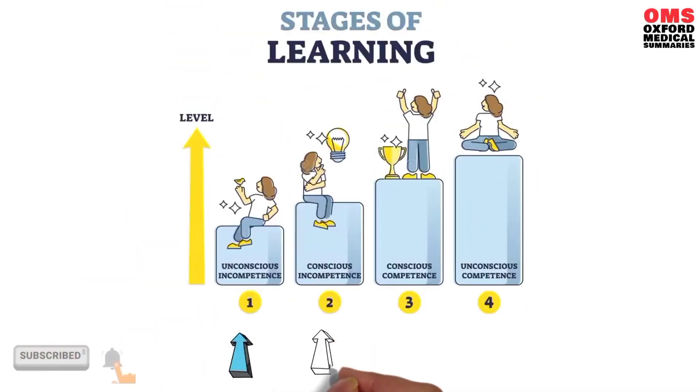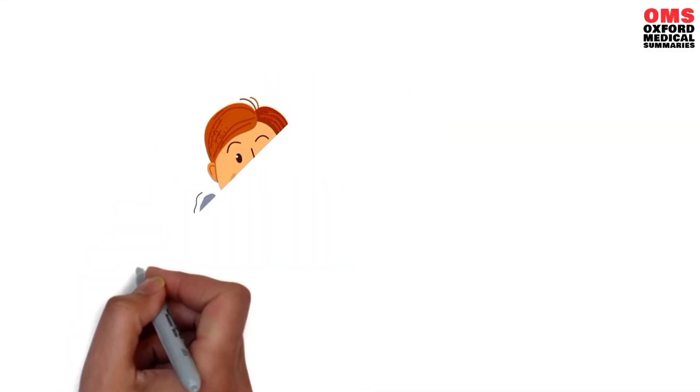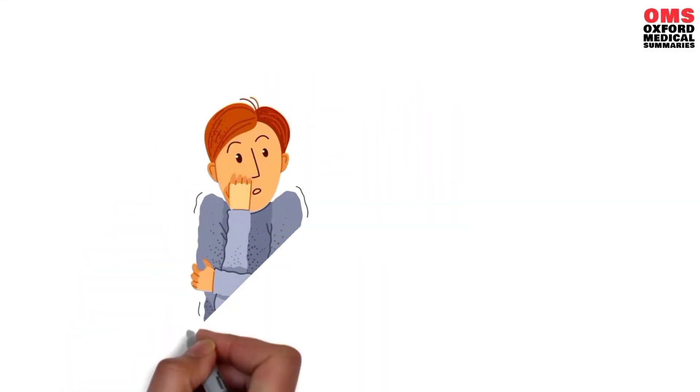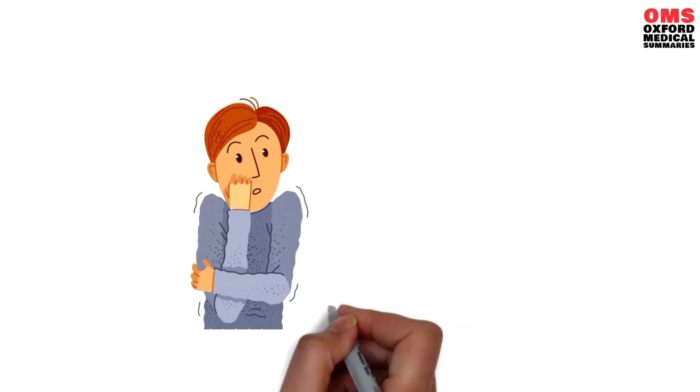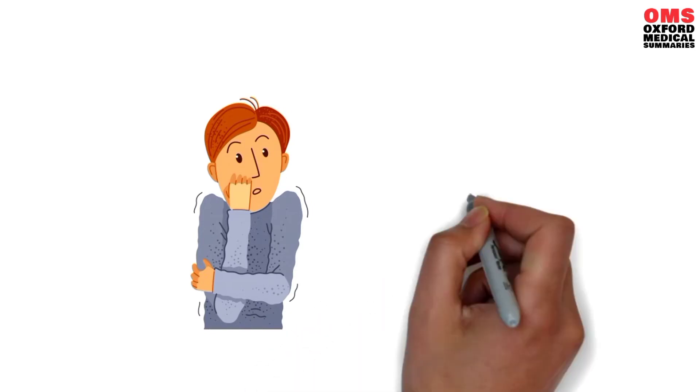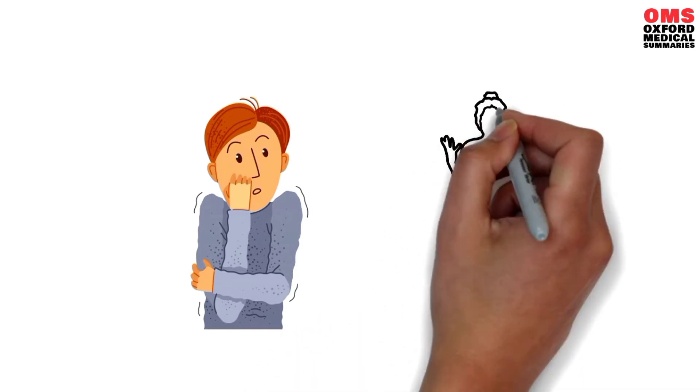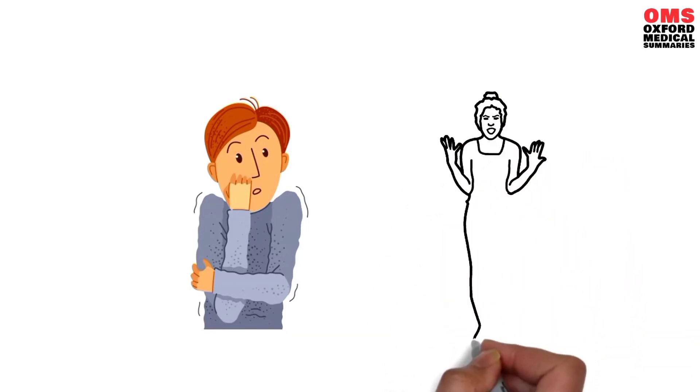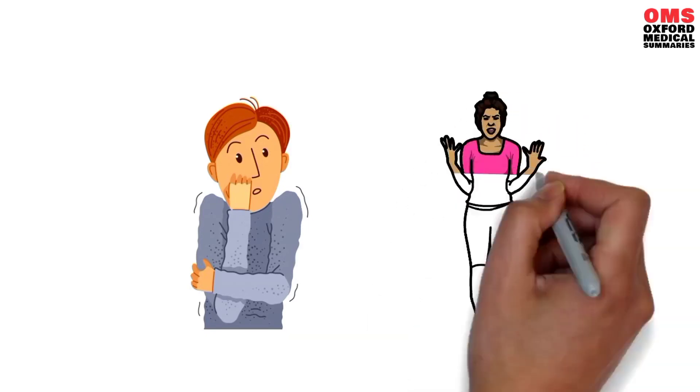Number two, conscious incompetence. Moving into the conscious incompetence stage means becoming uncomfortably aware of just how often you complain. You begin to catch yourself complaining but only after the fact and you can't seem to stop. You repeatedly switch your bracelet but your complaints don't seem to be diminishing. Some refer to this as the 'stop me before I complain' stage.